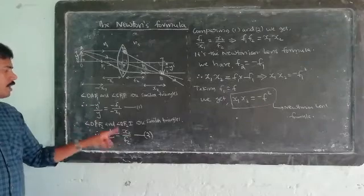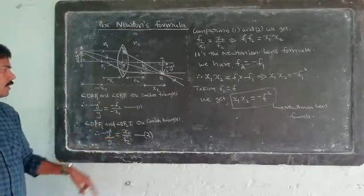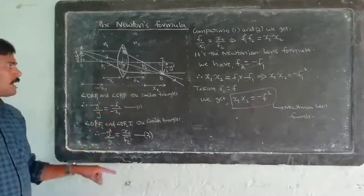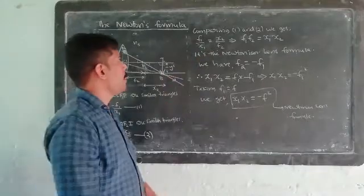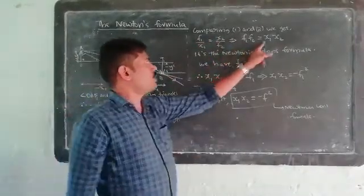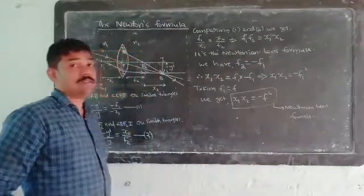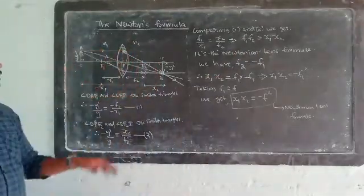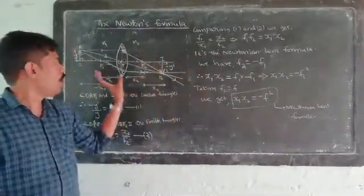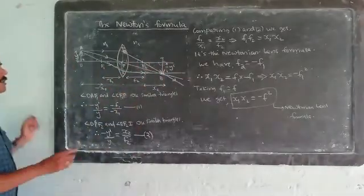Now, using F2D: F1 by X1 is equal to F1 by X2. This is the Newtonian Length Formula — Newton's Formula of Length.